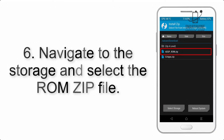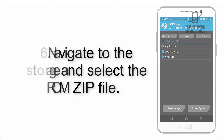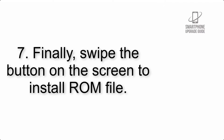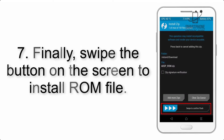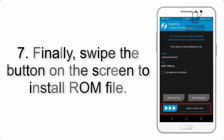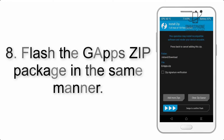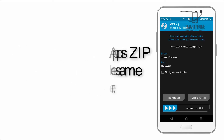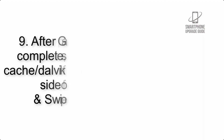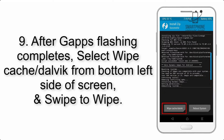Step 6: Navigate to the storage and select the ROM zip file. Step 7: Finally, swipe the button on the screen to install the ROM file. Step 8: Flash the GApps zip package in the same manner.